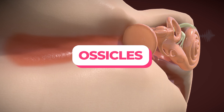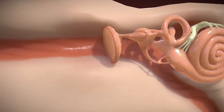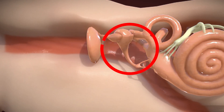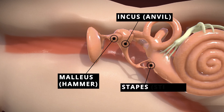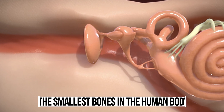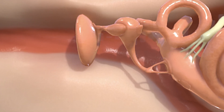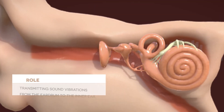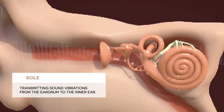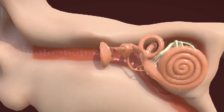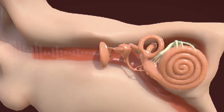The ossicles are a group of three tiny bones in the middle ear — the malleus, incus, and stapes. They are the smallest bones in the human body and play a crucial role in hearing by transmitting sound vibrations from the eardrum to the inner ear.